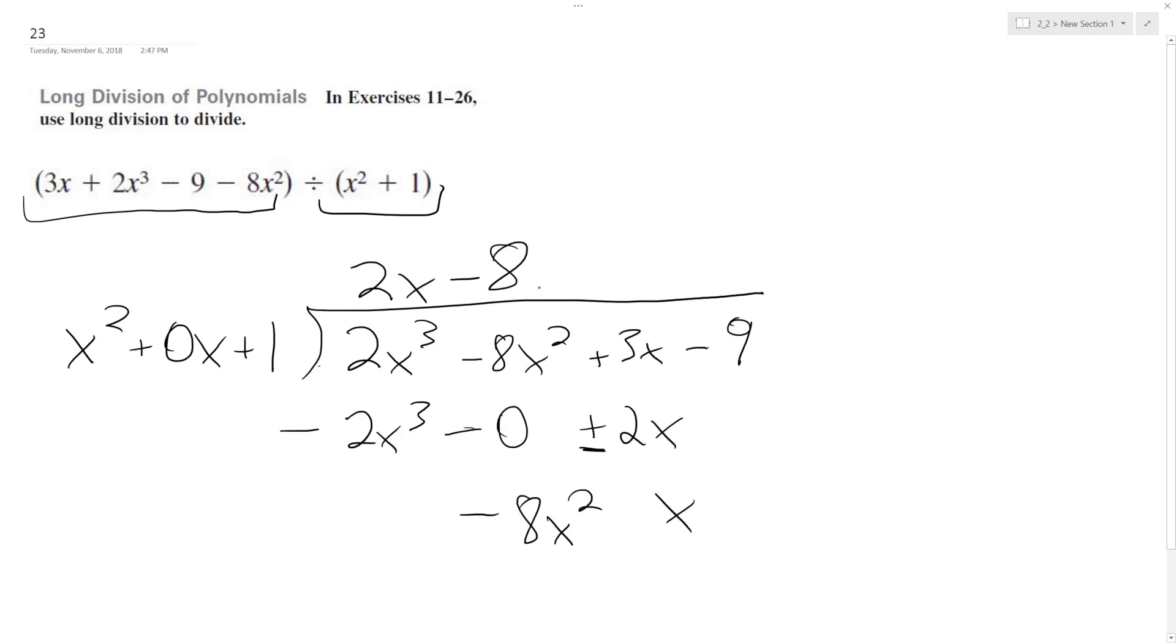x squared goes into negative 8x, negative 8 times. So we get negative 8x squared. And then we get 0.